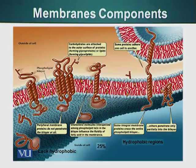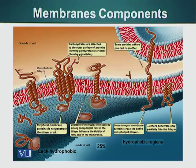Another category of proteins can also interact with the lipid bilayer, although indirectly — these are peripheral membrane proteins. They do not penetrate the membrane; however, they are associated with other membrane proteins that are embedded in the plasma membrane.